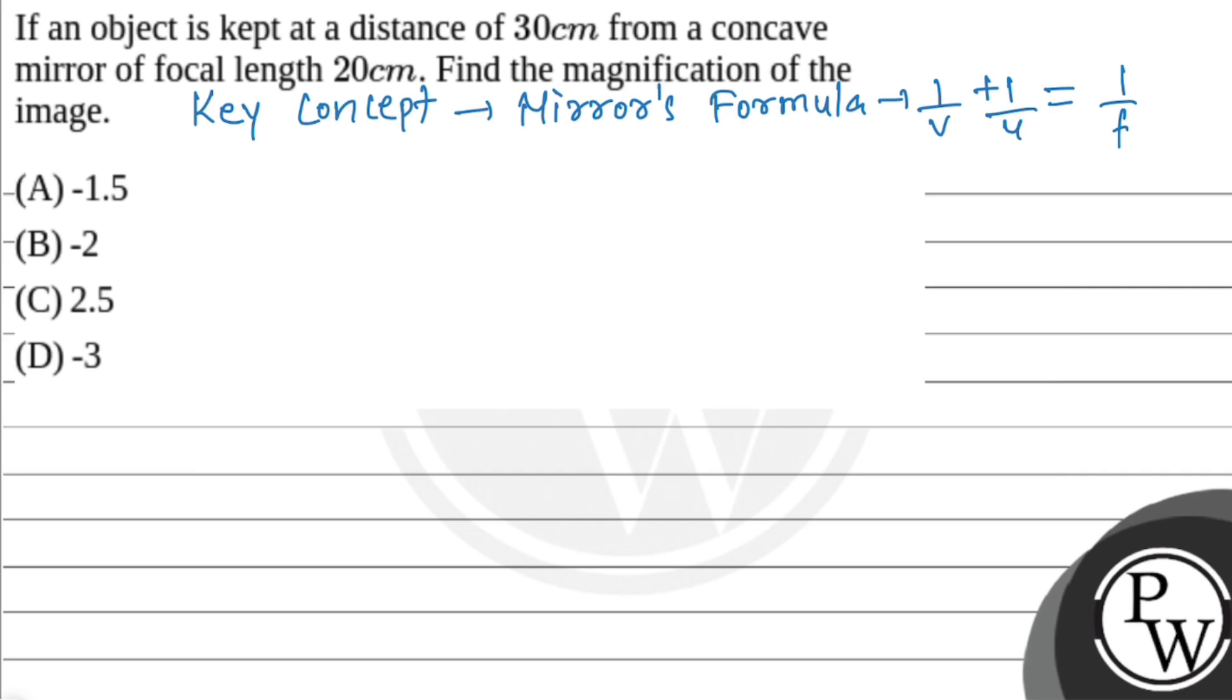Let's talk about a concave mirror. This is our concave mirror. This is the center line. We will take the left direction as negative and the right side as positive.